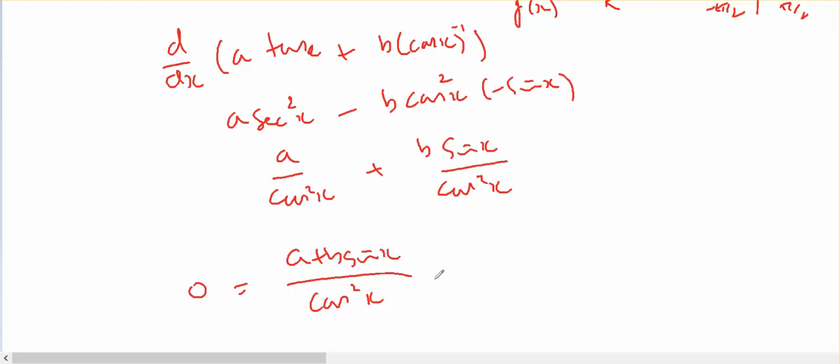And can that equal zero? Well, it equals zero not from the denominator. But it will equal zero if a + b·sin(x) equals zero, which means that sin(x) equals -a/b, which means x equals the inverse sine of -a/b.